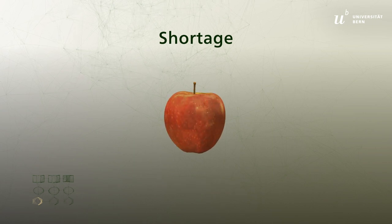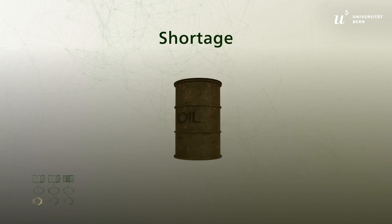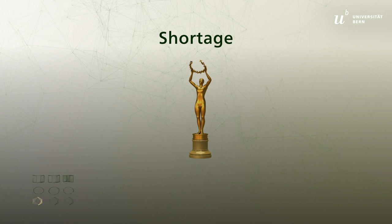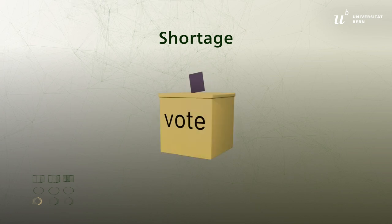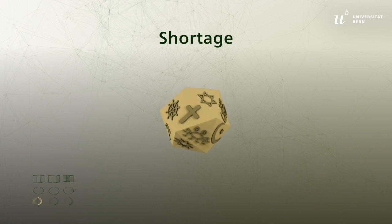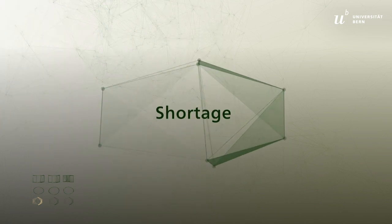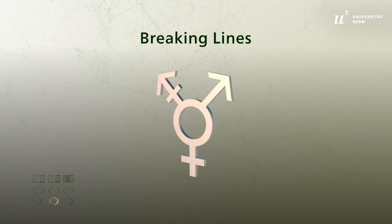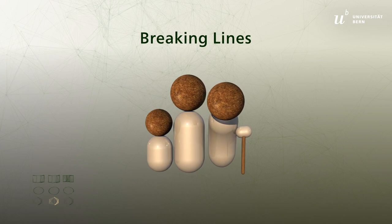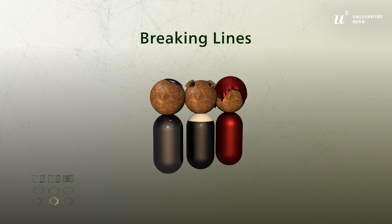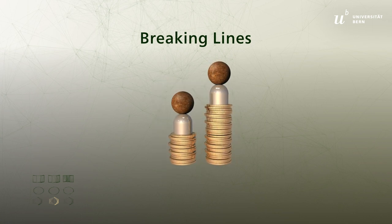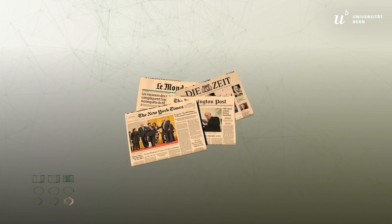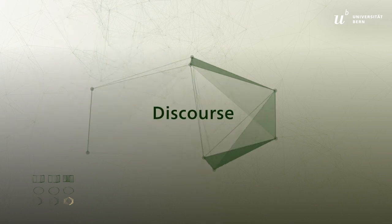Shortage can involve material goods such as food, territory, raw materials, or money, but also non-material goods such as education, power, social recognition, political participation, and even religious freedom. Conflicts over these limited resources break out along specific lines — societal identity markers such as gender, generation, ethnicity, religious affiliation, or social class. Moreover, every conflict has its own rhetoric, interpretations, and symbols. This is referred to as the factor of discourse.